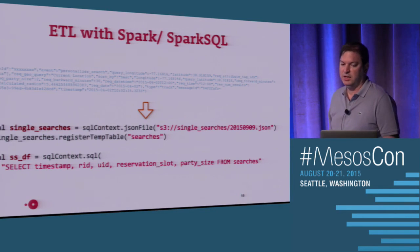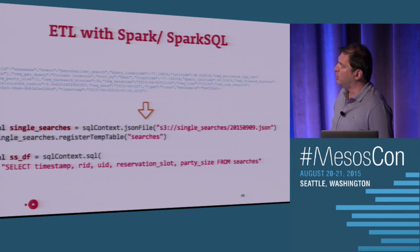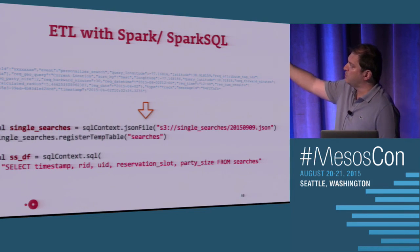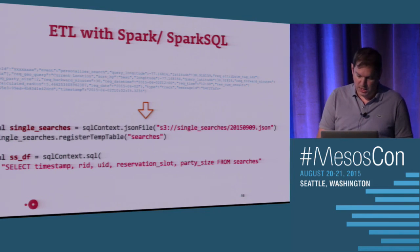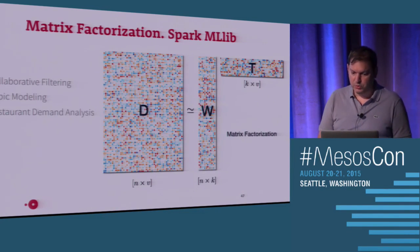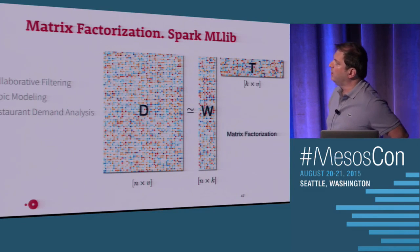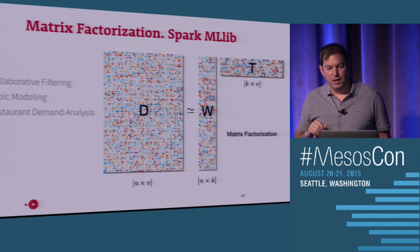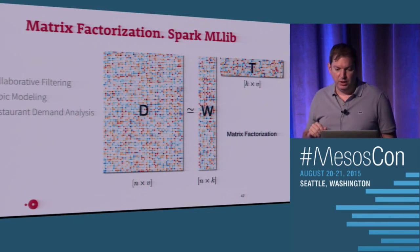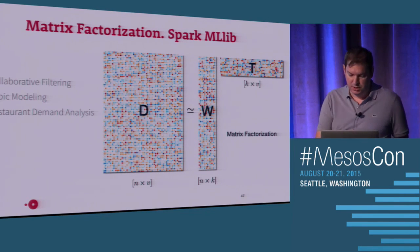Here is some of our ETL. We have several logs in the form of JSON, and we use Spark SQL to ingest JSON and operate over it with SQL. We do matrix factorization — the mechanism we use for collaborative filtering. We also use it for topic modeling, and we have a recent project on restaurant demand analysis that also uses time series and matrix factorization.